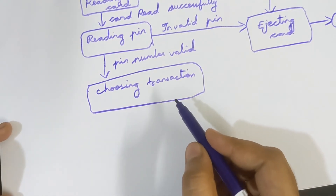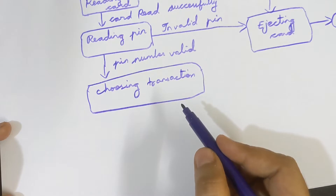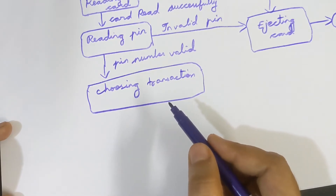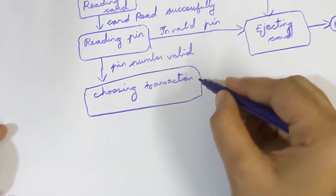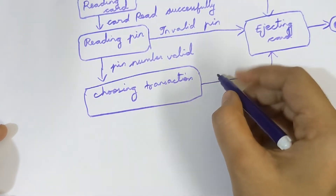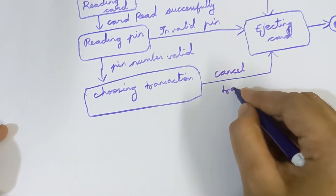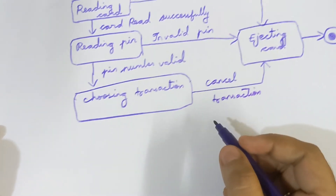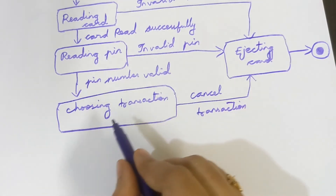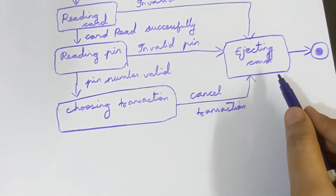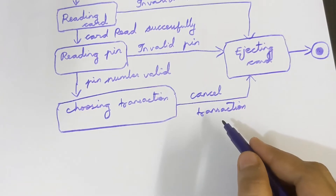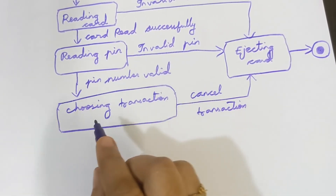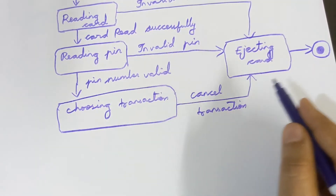In the Choosing Transaction state, there are various transaction options: you can withdraw money, deposit, or check your balance. If you don't want to choose any transaction, you can eject the card. The event happening is 'Cancel Transaction.' When the Cancel Transaction event happens, the state changes from Choosing Transaction to Ejecting Card, and the process ends there.